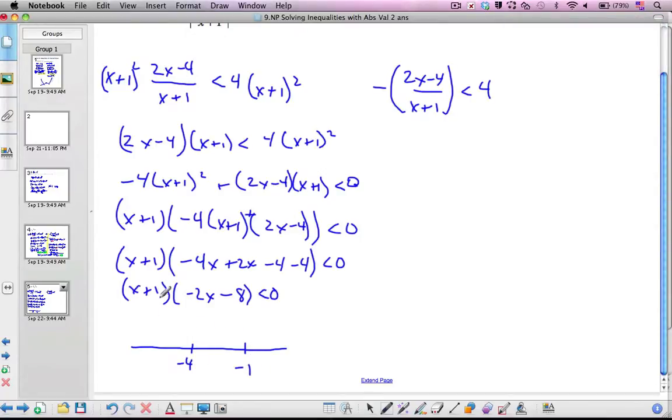So now consider our number signs. If I plug a value smaller than negative 4, so let's say negative 5, this is a negative. Negative 5 times I can choose positive 10. Minus that is positive. So I have a negative value overall. Between the two, this will be a negative factor. This one will be also a negative factor. So together it's positive.